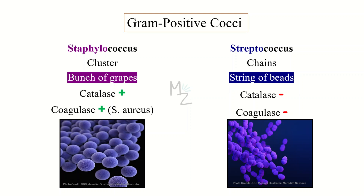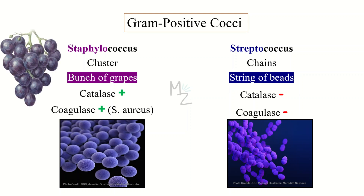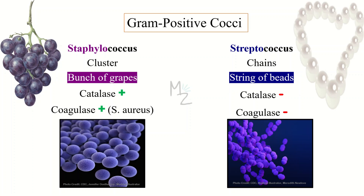Staphylococcus occurs in clusters, just like the one you can see in the picture, but streptococcus forms chains, as you can see in this picture. Staphylococcus resembles a bunch of grapes, while streptococcus resembles a string of beads.